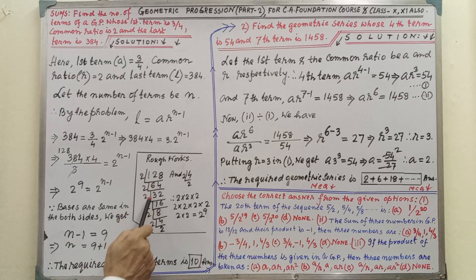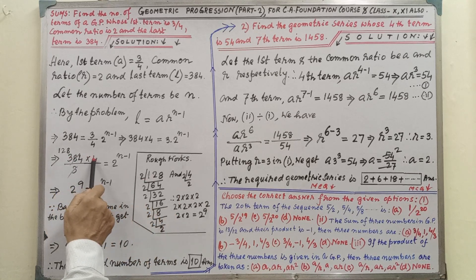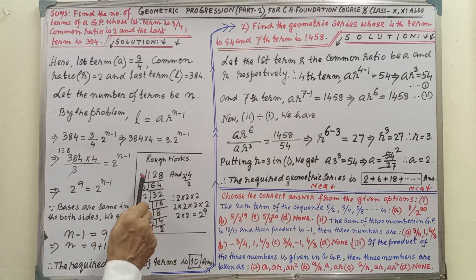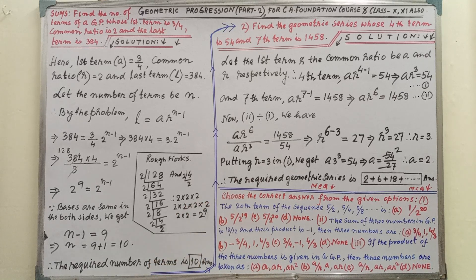That is, by LCM we are getting the factors from 128 and 4. This total number of 2s: 1, 2, 3, 4, 5, 6, 7, 8, 9. So 2 to the power 9.